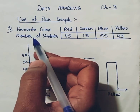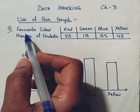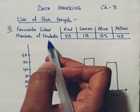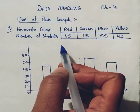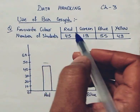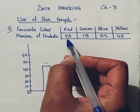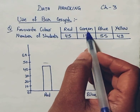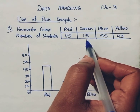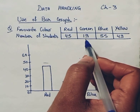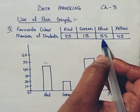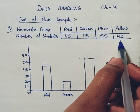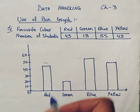A question has been taken which is simply a table in which some colors are given — these are the favorite colors of students in a class. 45 students chose red color, green color is liked by 19 students, 55 students chose blue color, and 49 students chose yellow color.